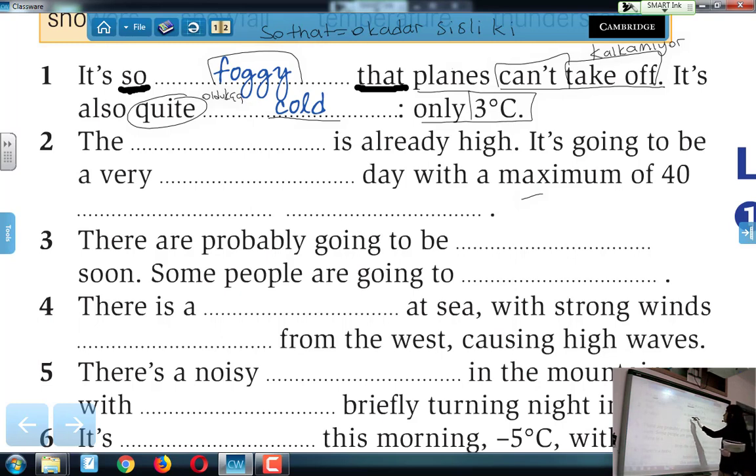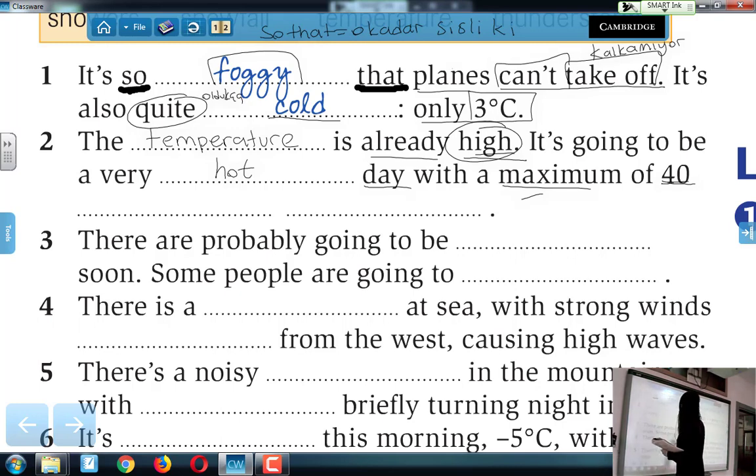Number two. The bla bla is already high. Şimdi ne yüksek olur? İsim arayacağız yukarıdakilerden. Temperature. Sıcaklık yüksek olur. The temperature is already high. It's going to be a very bla bla day. Şimdi derece yüksek olacağına göre bugünkü hava sıcak olması lazım. Sıcağın karşılığı neydi? Hot. With a maximum of 40. Bak 40. Maksimum kaç derece olacak? 40 derece olacak. Dereceyi de biz nasıl söylüyorduk? Önce degrees. Sonra centigrade. Bunun kısaltılmışı da şu. Kırk derece santigrat.